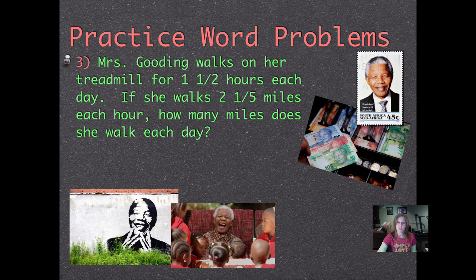Number three. Mrs. Gooding walks on her treadmill for 1½ hours each day. If she walks 2⅕ miles each hour, how many miles does she walk each day? Go ahead and pause it and push play when you've figured it out.